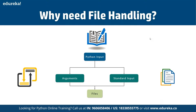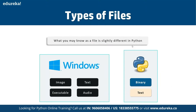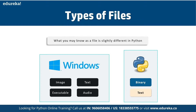There are multiple types of files available. In Windows we have files in formats such as images, text, executables, audio clips, documents, PDFs, and more. In Python, we work with either binary or text data sets.